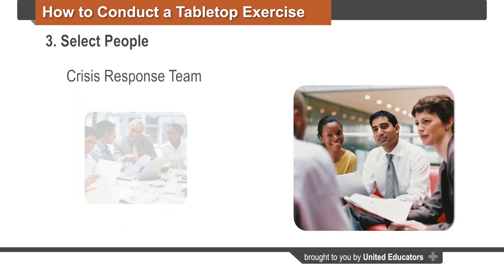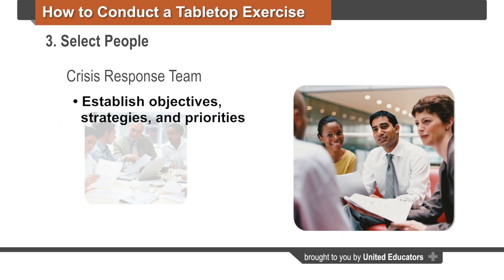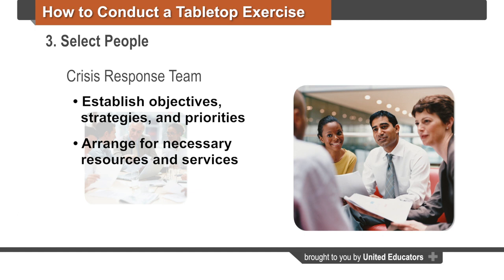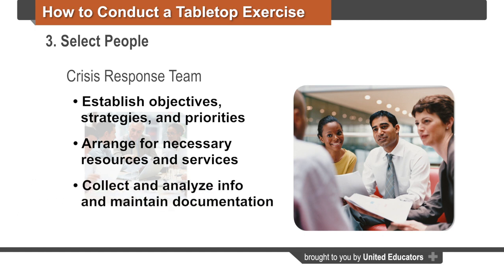You will also need to identify which members of your crisis response team should actively manage the situation. In the event of a crisis, this team will execute all components of your institution's response. The team could establish objectives, strategies, and priorities to manage the incident; arrange for and track necessary resources and services; and collect and analyze information and maintain documentation. For example, if the selected scenario is an electrical malfunction that knocked out power to your research labs, you may choose to include members representing facilities, purchasing, faculty, and risk management.